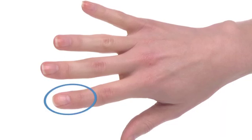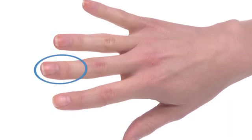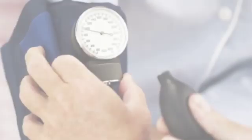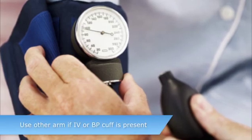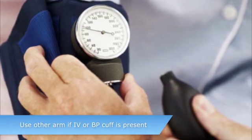The sensor may be placed on the index, ring, or middle finger. If there is an IV or BP cuff on one arm, use the other arm and fingers for sensor placement.